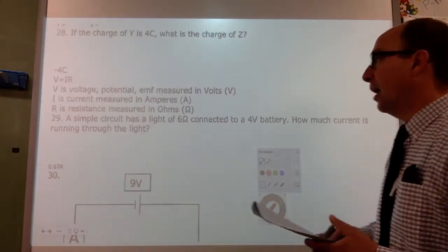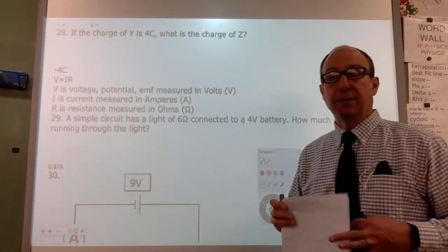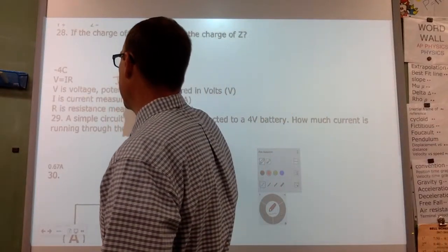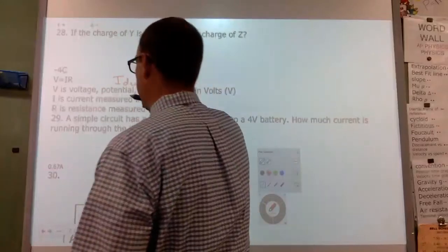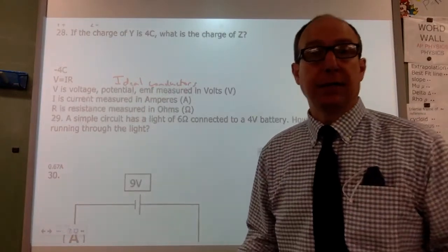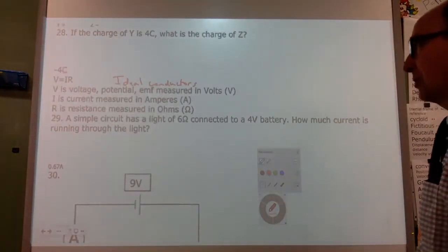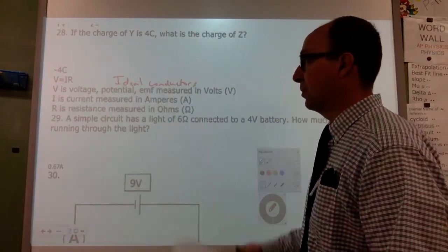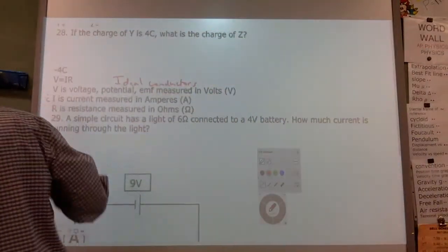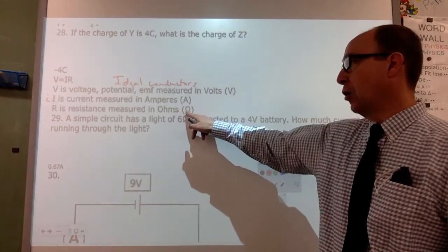The main equation for circuits is derived from Ohm's law: V = IR, which relates potential to current to resistance. This only works for ideal conductors — ohmic materials. Luckily, things in circuits are considered ohmic. V is our voltage, also called potential or electromotive force — what Faraday called it — measured in volts. I is our current, measured in amperes.